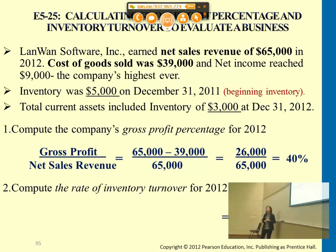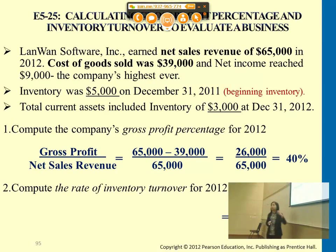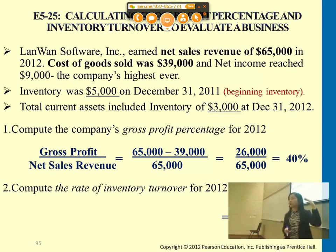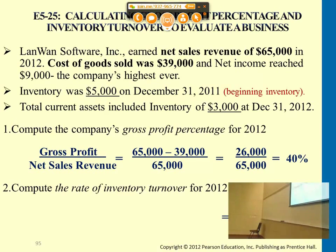Last season net sales was $35,000 and gross profit was $32,000. Any percentage below that this season would seem as an increasing trend for gross profit. The higher the better compared to prior seasons.